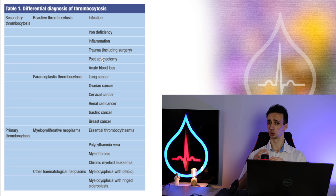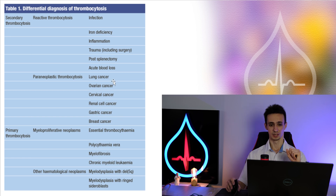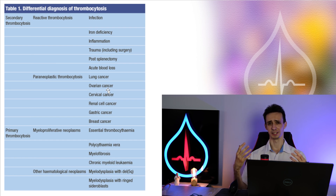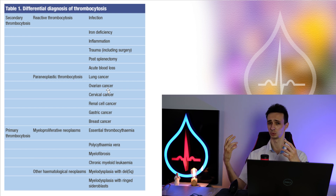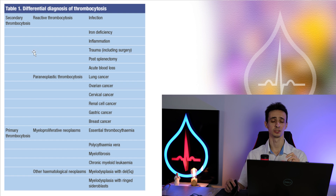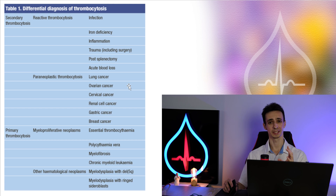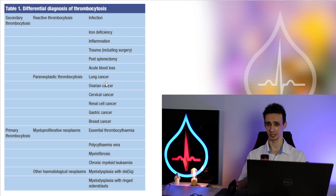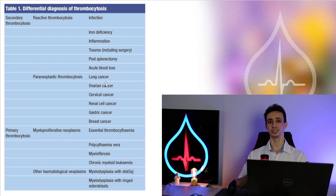The next group of causes is solid tumors: lung cancer, ovarian, cervical, renal, gastric, and breast cancer. These cancers produce cytokines — they want to have lots of thrombocytes to activate them and use them as protection when tumor cells circulate in the blood, using thrombocytes as a shield against immune cells. Usually high levels of thrombocytes don't increase the risk of thrombosis, but in the case of tumors the risk of thrombosis can be increased, and these patients may need anti-clotting medications. The oncologist will assess whether the risk is high and prescribe these medicines.